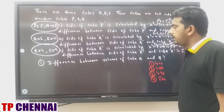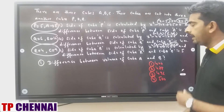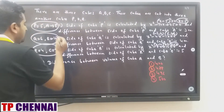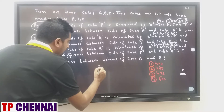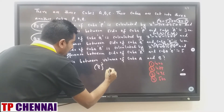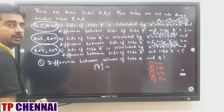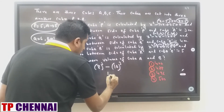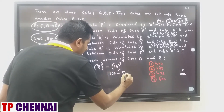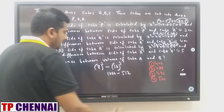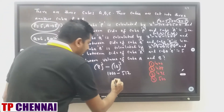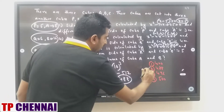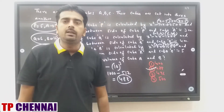First question: difference between the volume of cube A and B. Volume of a cube is side cubed. A = 8, so A³ = 512. B = 10, so B³ = 1000. Therefore 1000 minus 512 = 488. Answer is the second option.